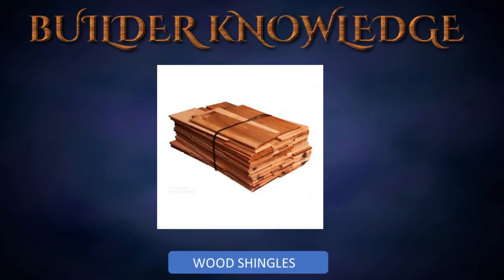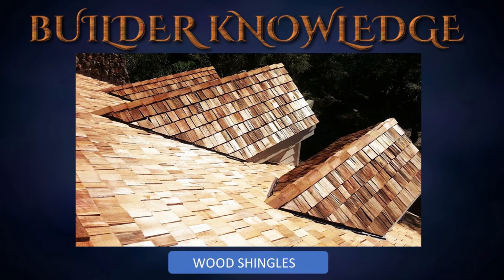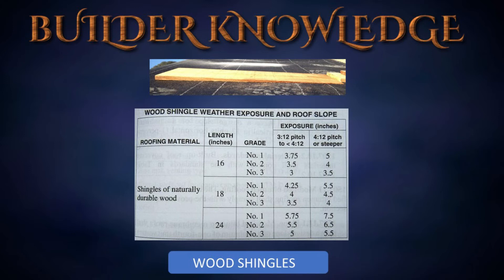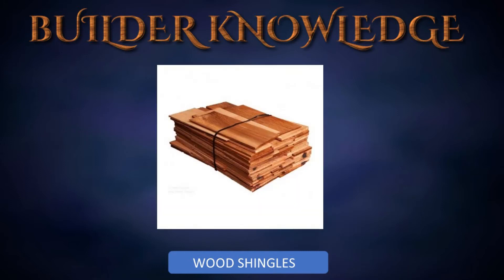The next exterior treatment is wood shingles. Wood shingles are among the oldest types of roof coverings, applied when a rustic architectural effect is desired. They are commonly available in three standard lengths: 16, 18, and 24 inches. The 16-inch length is the most popular, and has five butt thicknesses per two inches of width when green — meaning five butts stacked on top of each other total two inches in thickness. When packed in bundles, it takes four bundles to cover 100 square feet with a five-inch exposure.